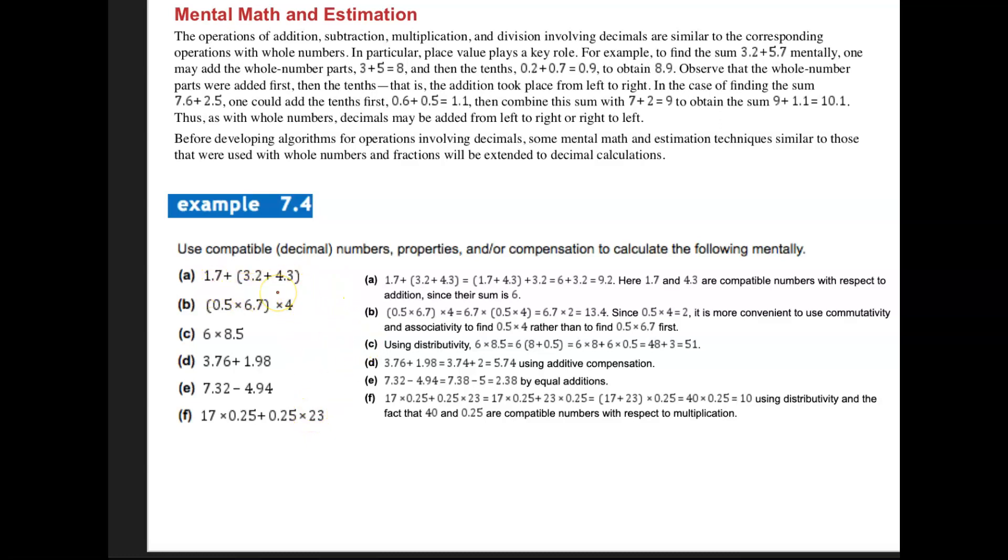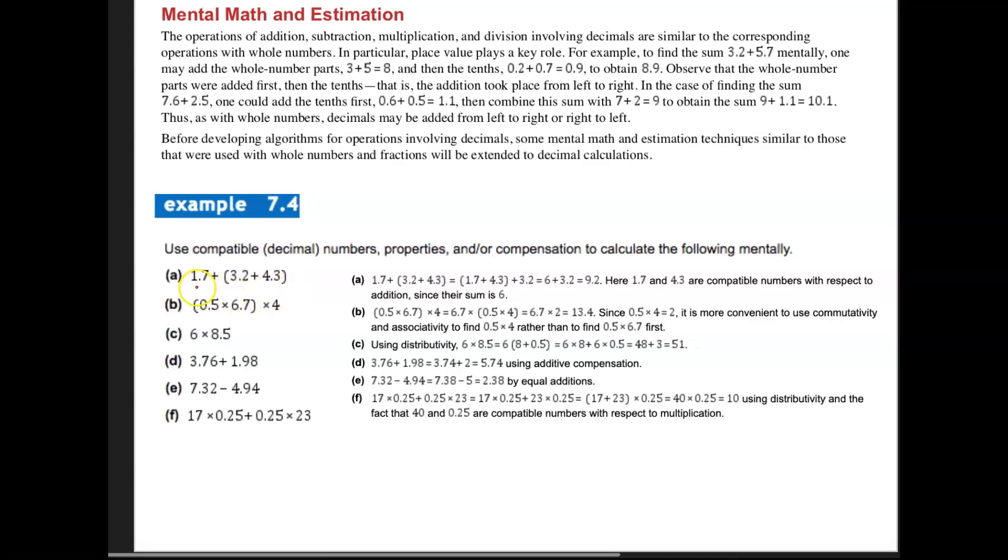The decimals follow the same rules of addition that we've had before. I would move these together. And you can see some of these explanations here. A half times a four, I would do that first. You can use associative property to do that.